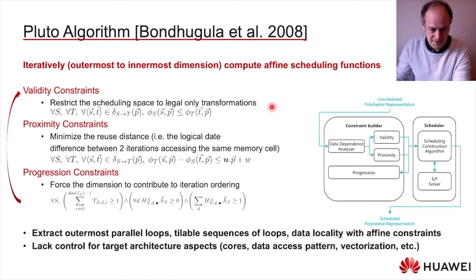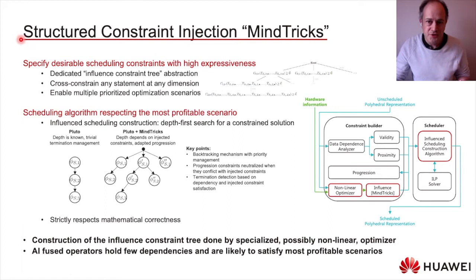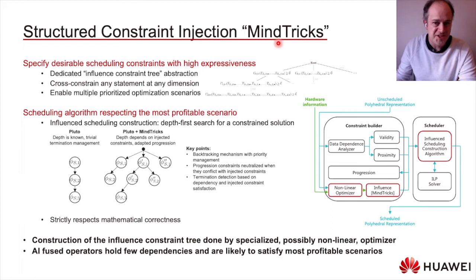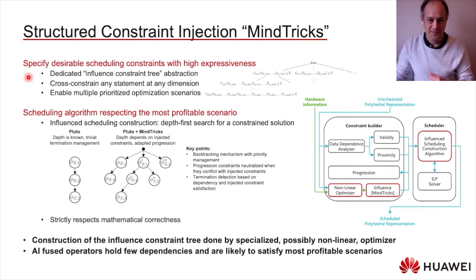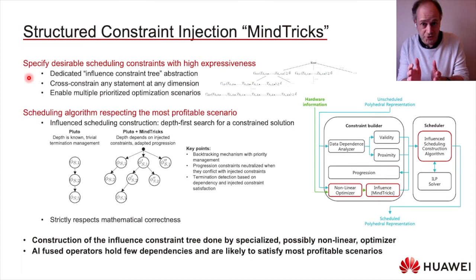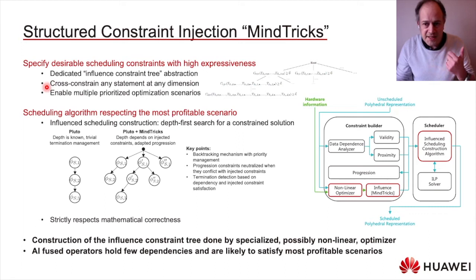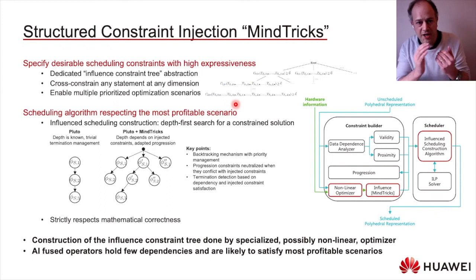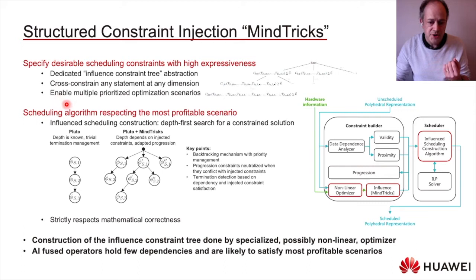To provide such control, we propose a structured way to inject constraints into the scheduling construction. We named this internally 'mind tricks,' as a reference to a Jedi Knight's ability to change someone's mind — here, changing the polyhedral scheduler's mind to tell it how we want to optimize. To specify what we want, we propose an abstraction called the influence constraint tree, which stores constraints for the scheduling function construction with the possibility to link any coefficient at any dimension for any statement.